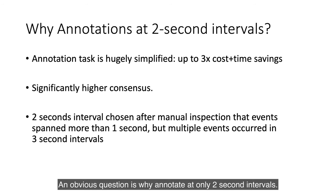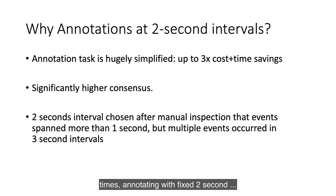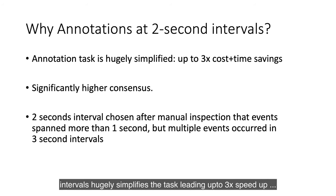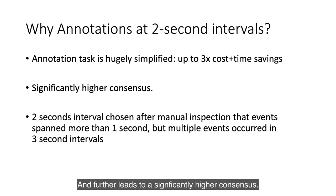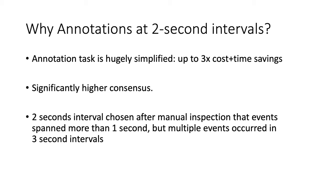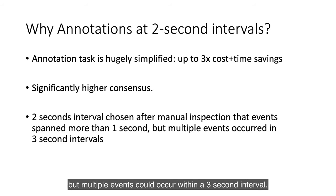An obvious question is: why annotate at only 2-second intervals? In our preliminary investigations, we find that compared to annotating with start and end time, annotating with fixed 2-second intervals usually simplifies the task, leading to up to 3 times speedup in time as well as cost, and further leads to significantly higher consensus within annotators. Finally, a manual inspection reveals that events usually span more than 1 second, but multiple events could occur within a 3-second interval.